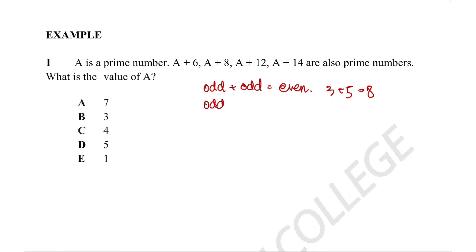Odd + even always gives odd, for example 3 + 2 = 5. Finally, even + even always gives even, for example 2 + 4 = 6.